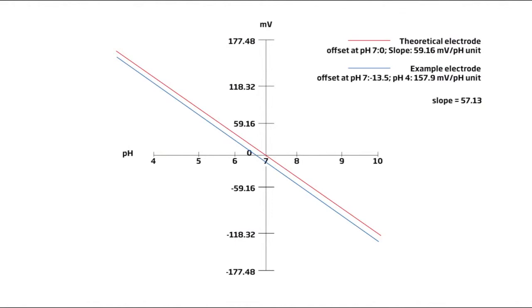The response of a glass sensing pH electrode is based on the Nernst equation and has a theoretical slope of 59.16 millivolt per pH unit change at 25 degrees Celsius.